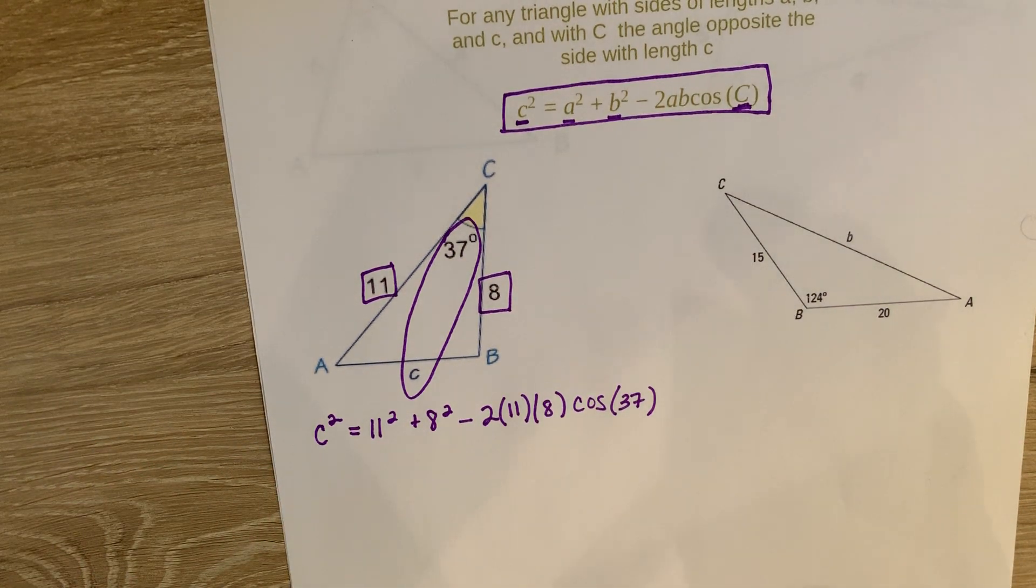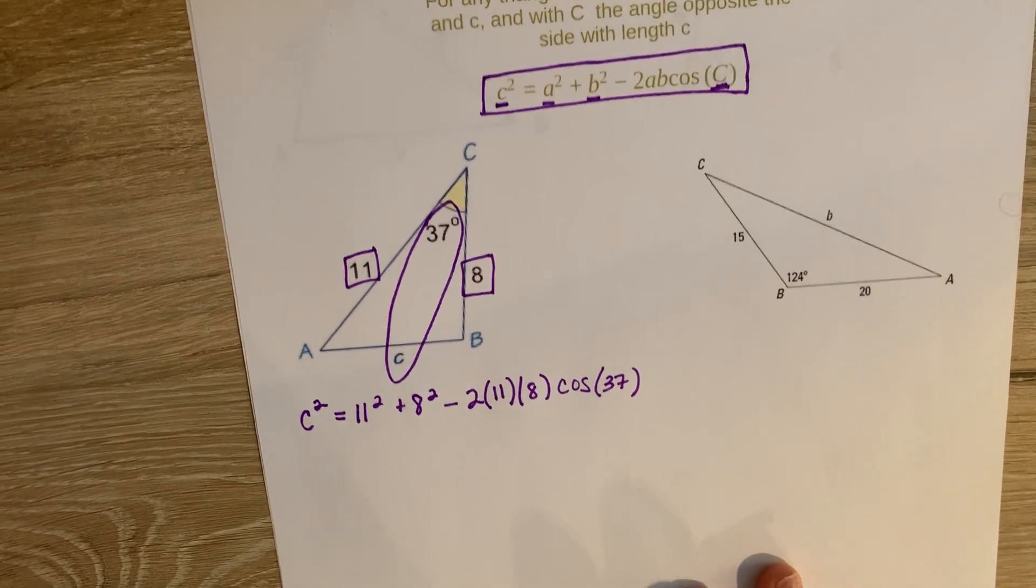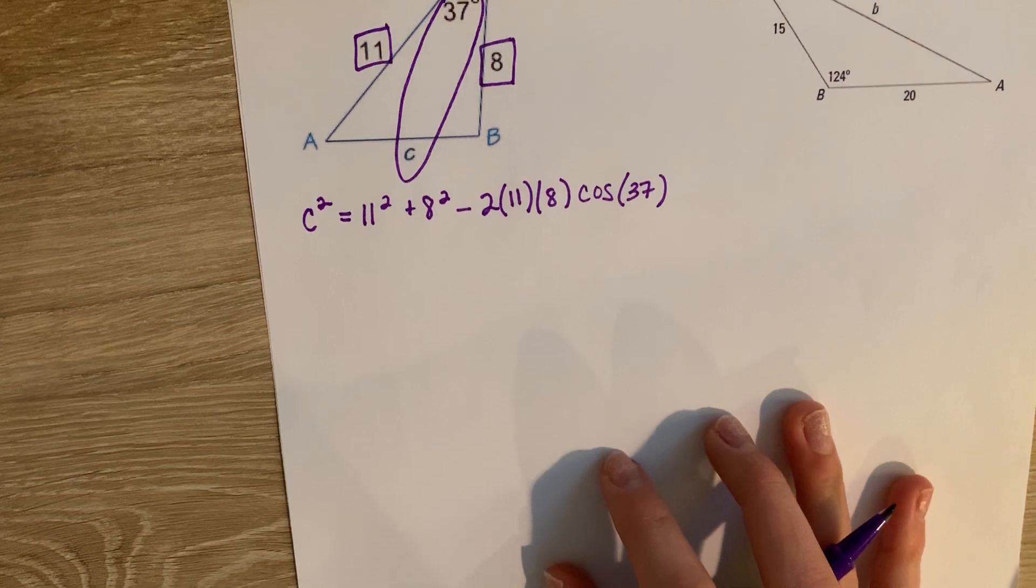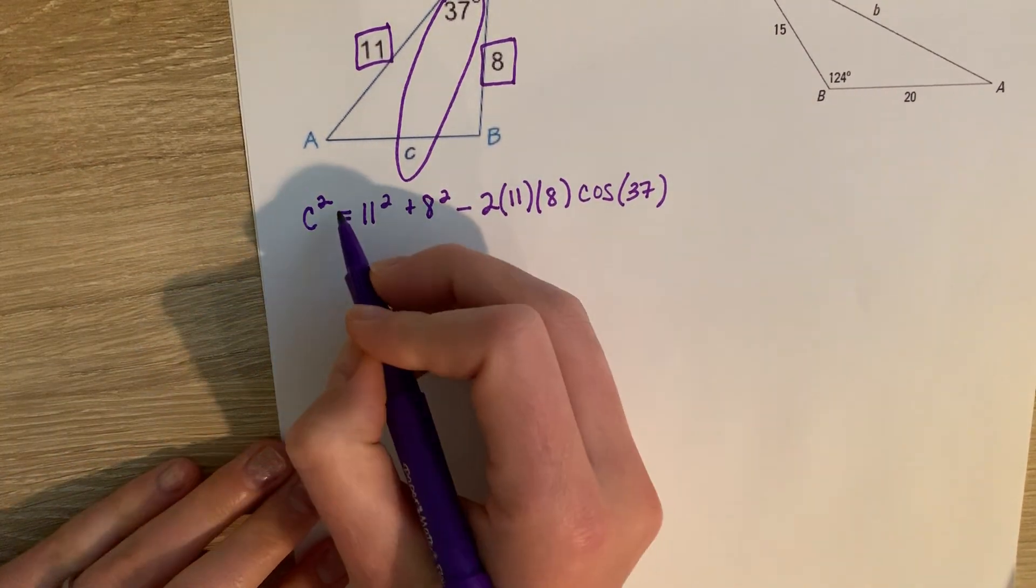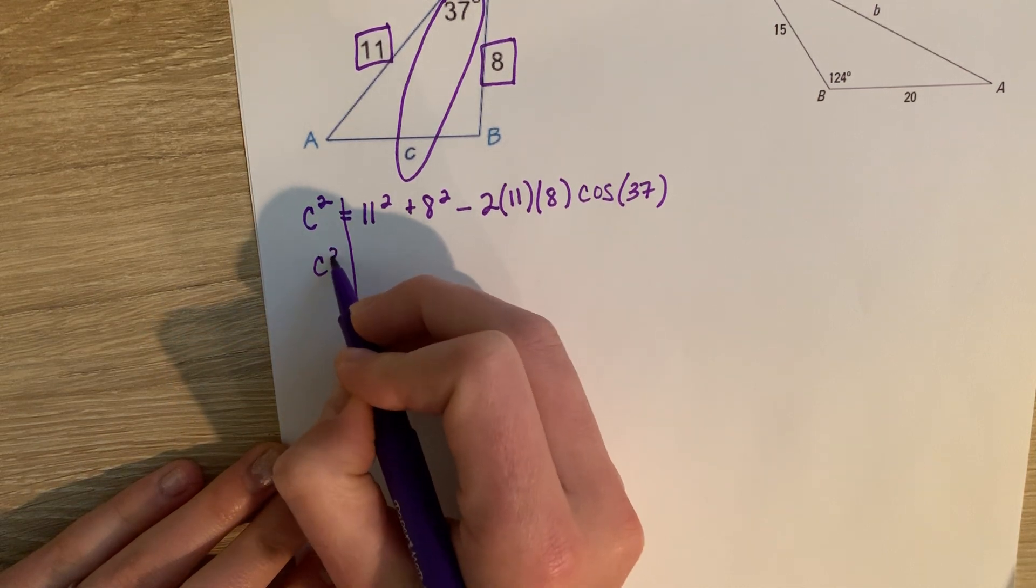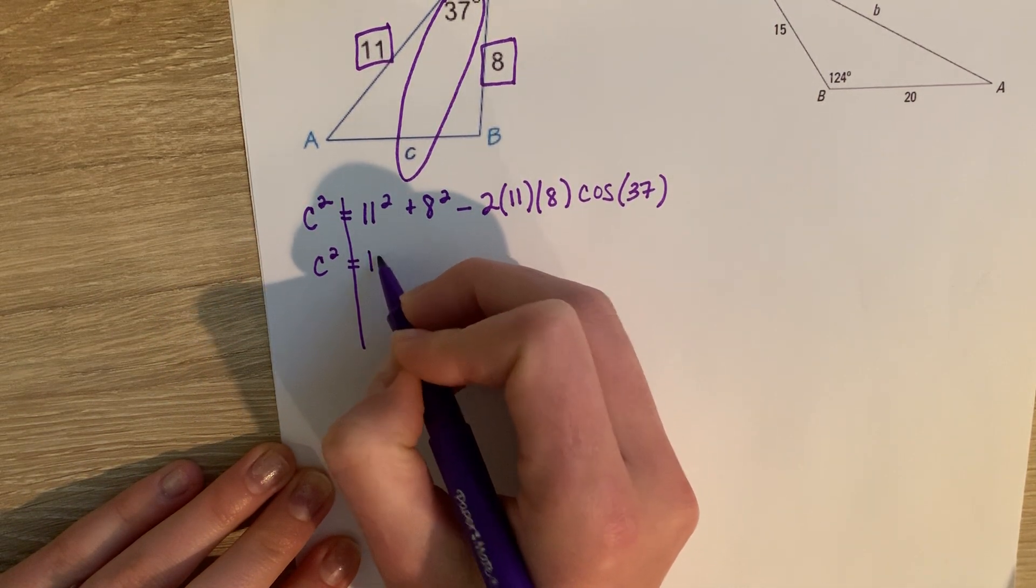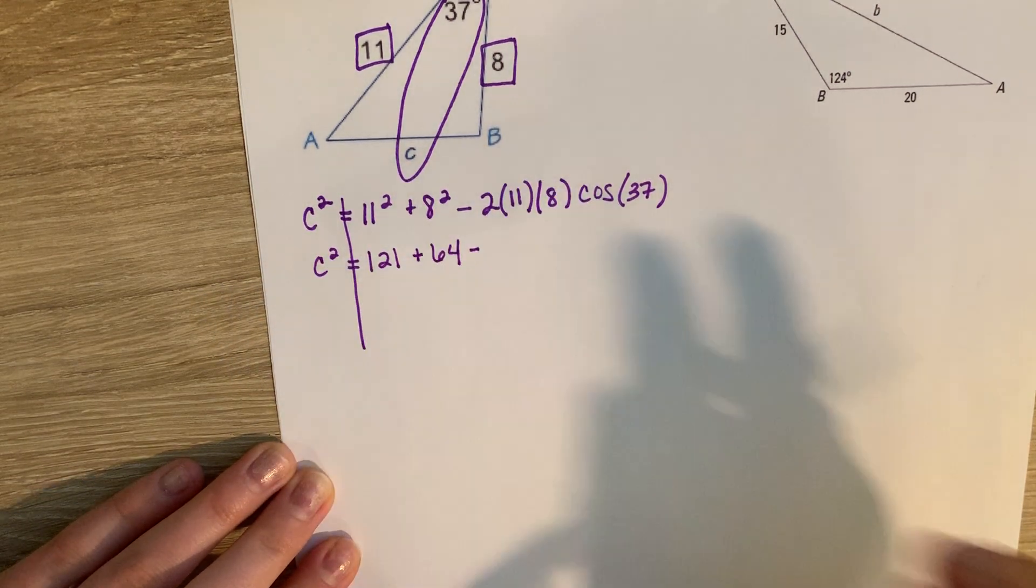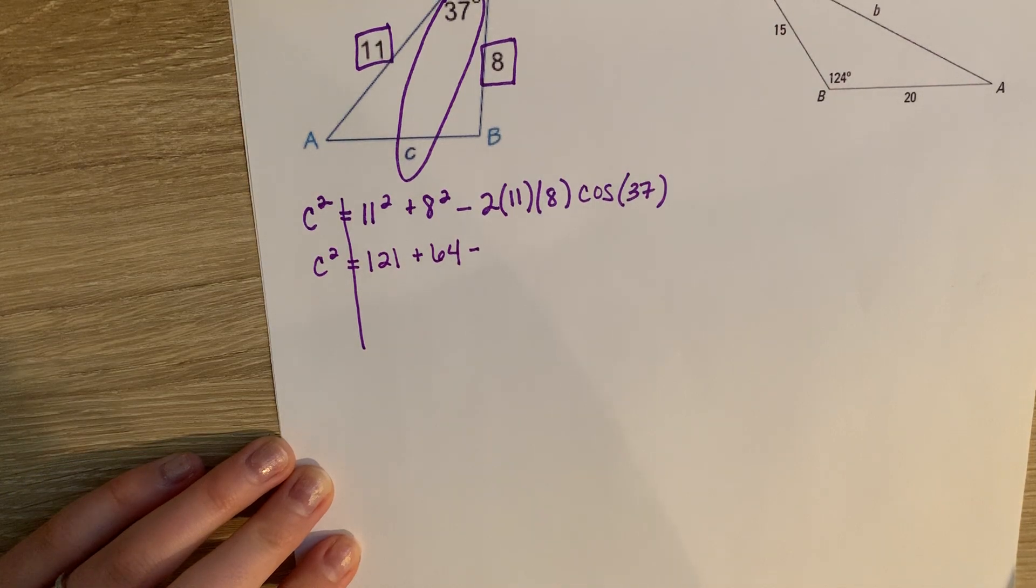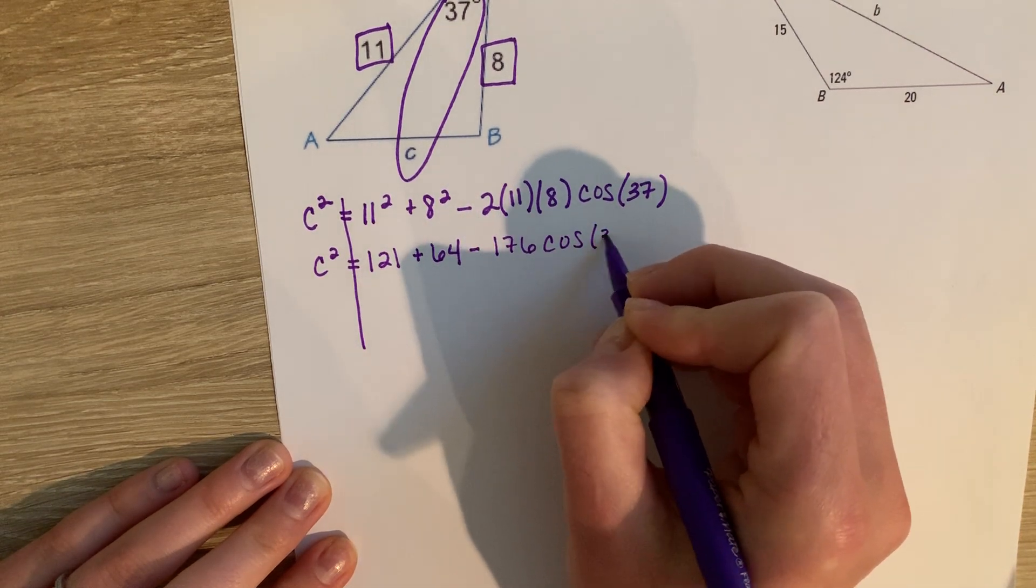The hardest part of law of cosines is actually doing the algebra from here. Typically, that's where people struggle with is being able to solve for c at this point. So first, c squared is going to say I know 11 squared, we get 121, and we get 64, and we get 2 times 8, so we get 176 cosine of 37.